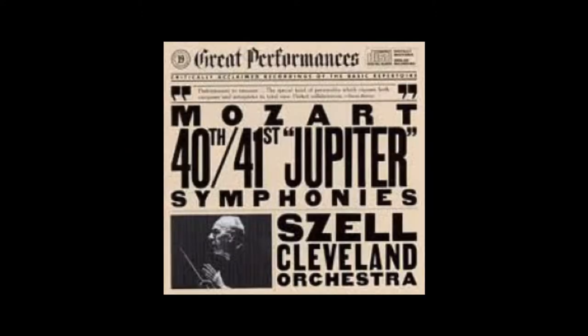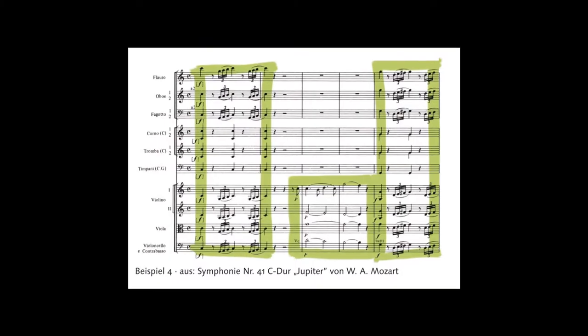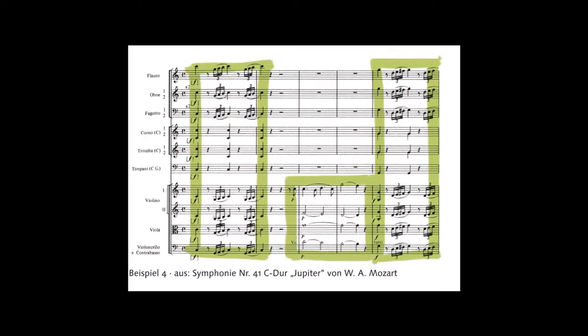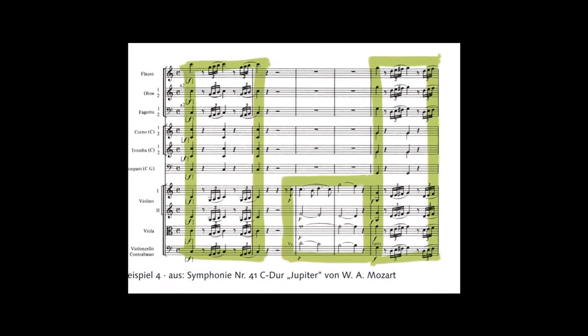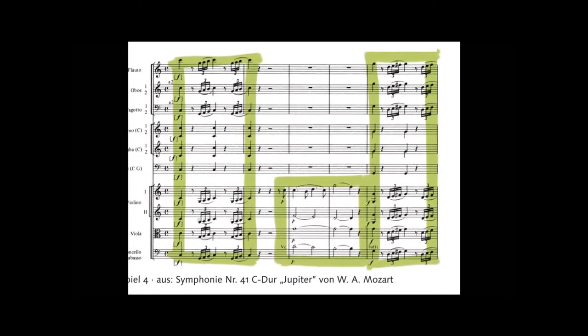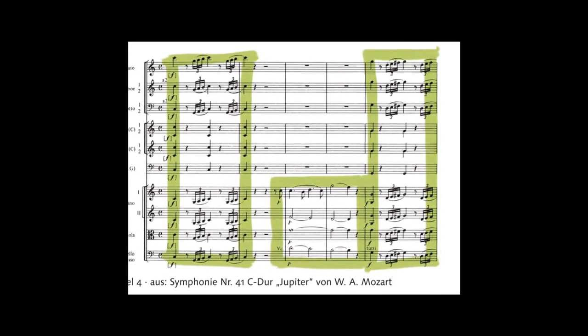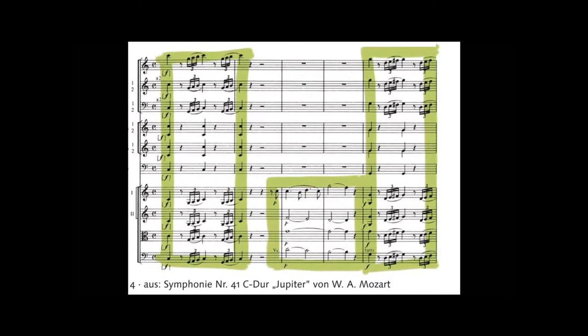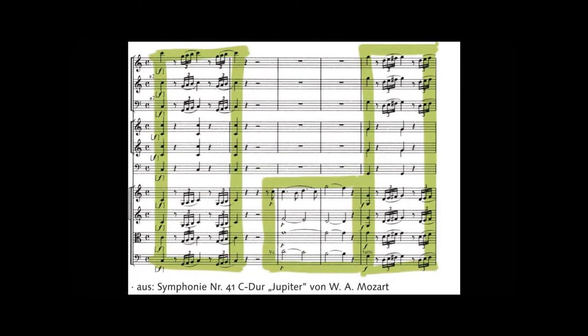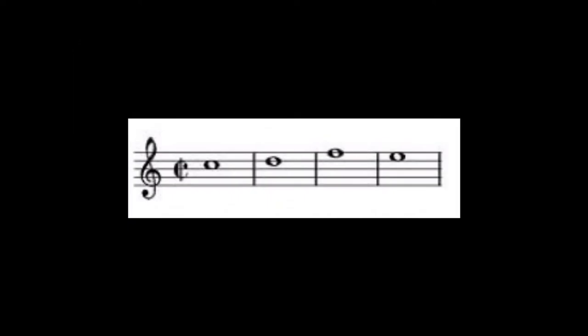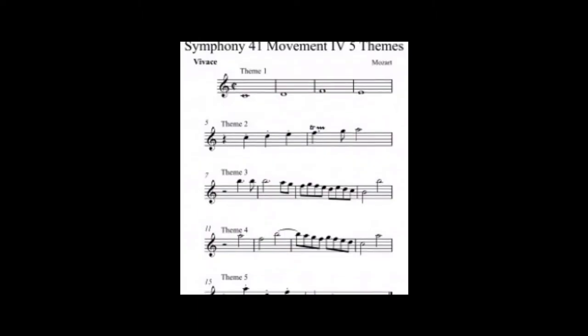Mozart uses imitation in his 41st Symphony, the final published symphony in his lifetime. He distributes the melodic idea around the orchestra at different times during the first movement. In the second movement, he also makes use of imitation, but it is much slower and more lyrical than the first movement.